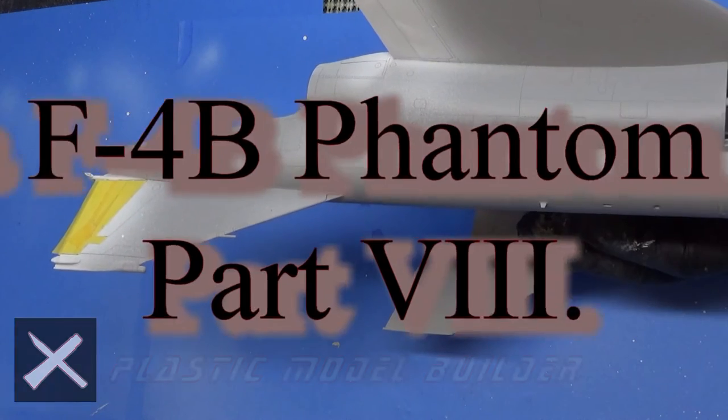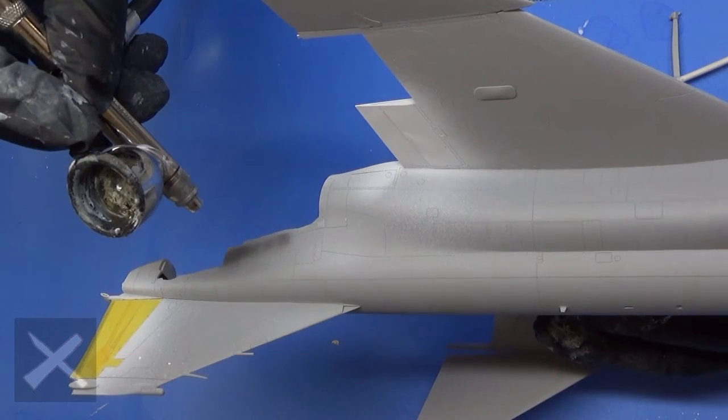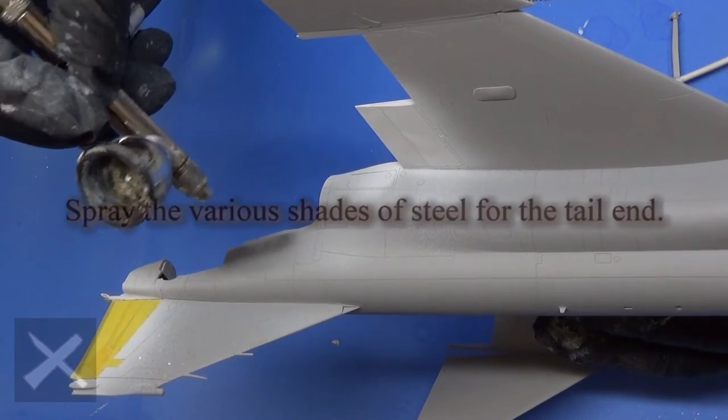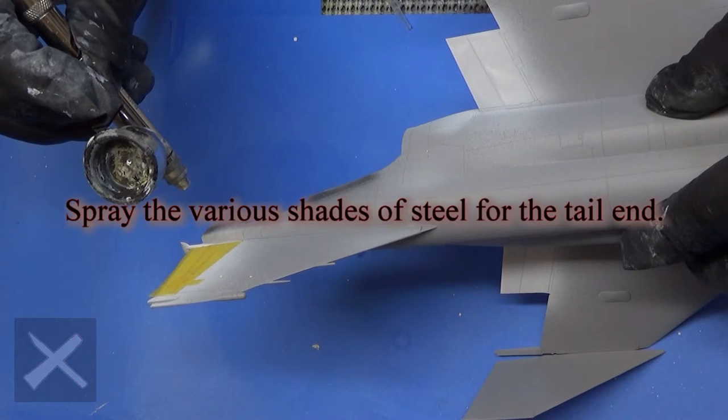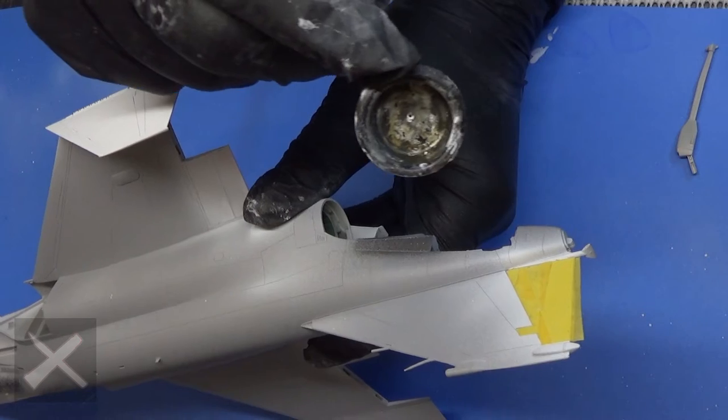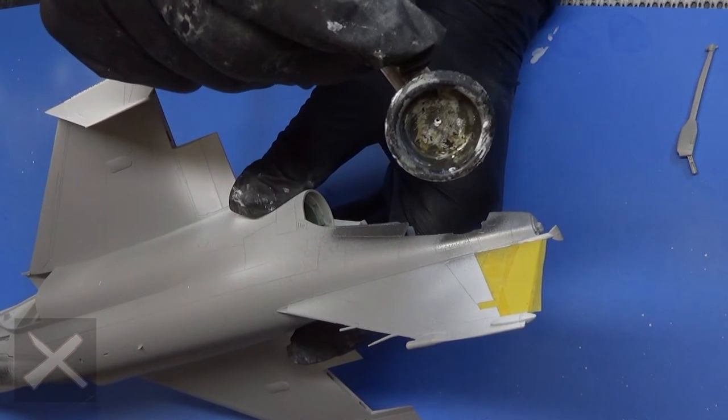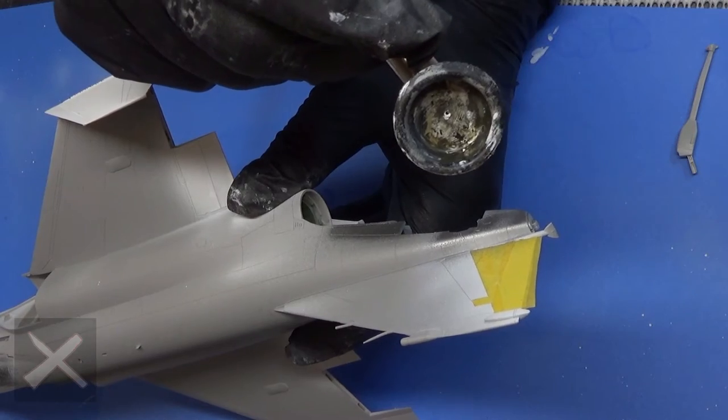Hello, Plastic Model Builders. Welcome back. It is I, Ari, your host of Plastic Model Builder. We are continuing this F4 Phantom B by Tamiya. We are making it look pretty with some model making madness. We are clearly here doing the tail section, painting our silver bits.